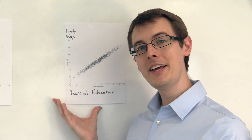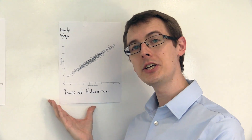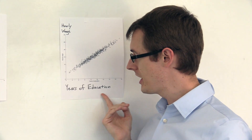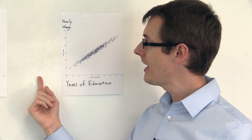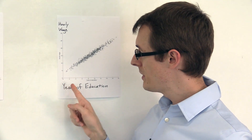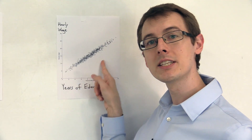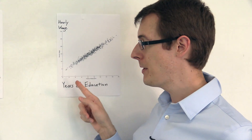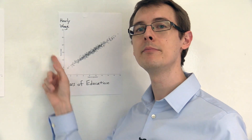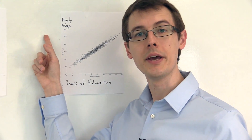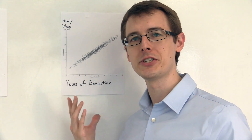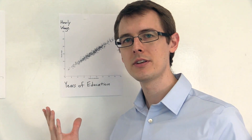So in my fake data, I've got the relationship between years of education and how much money you make. We see in the data that there's a positive relationship — people with more education tend to make more money. So does that mean there's a causal effect of education on wages?